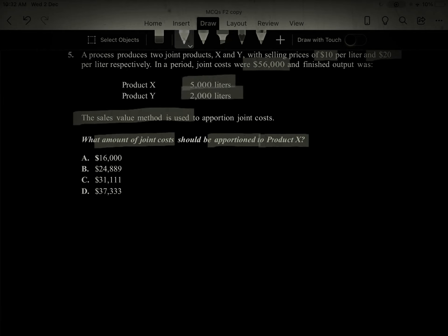When you have a question of joint by-product, the sales value method is the first approach. So we have two products, X and Y. A common mistake students make...